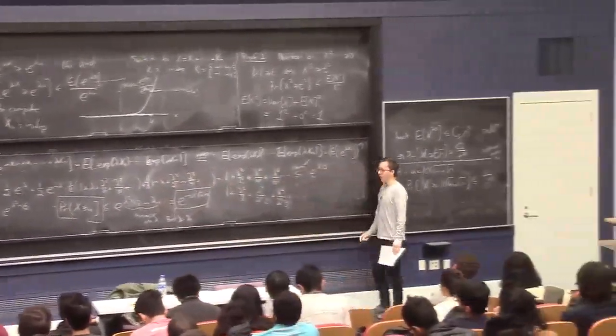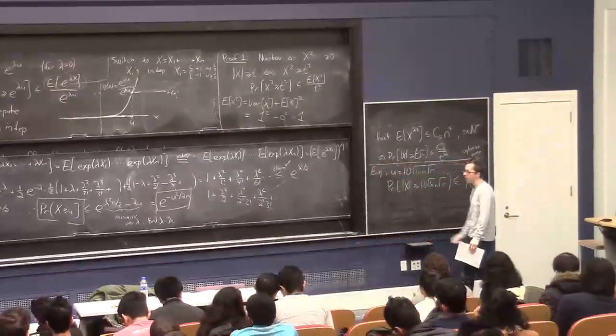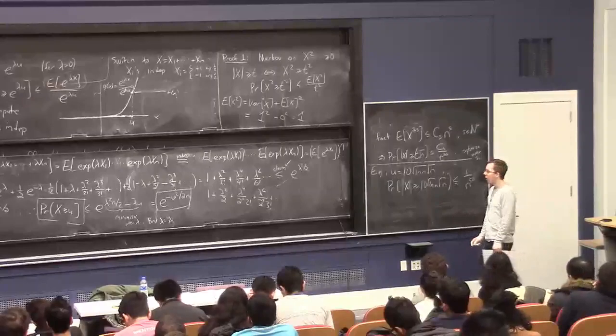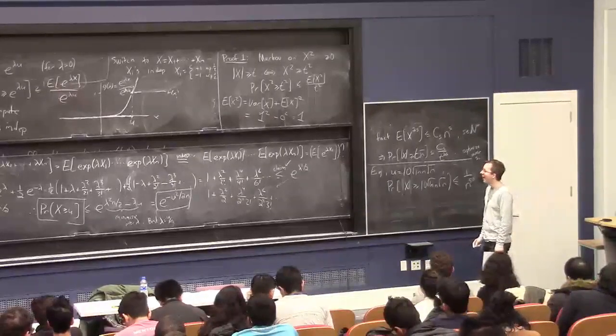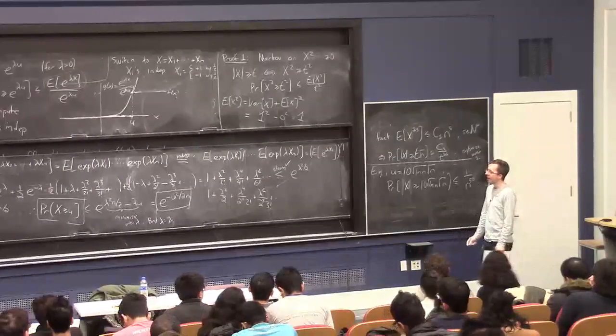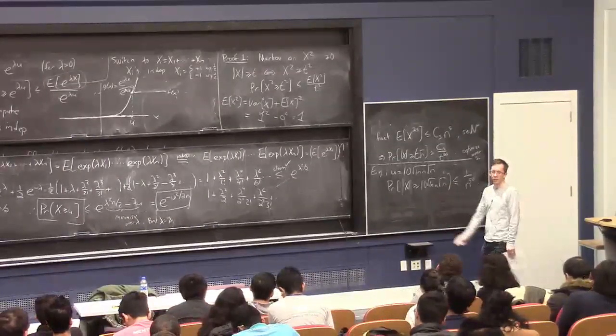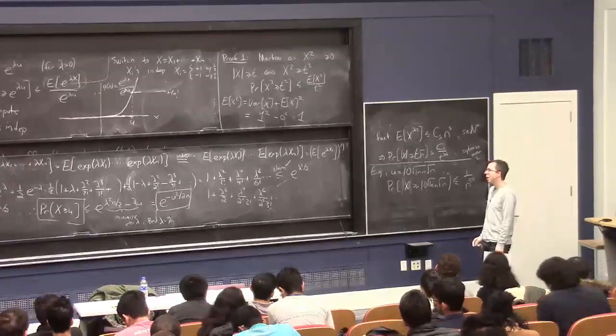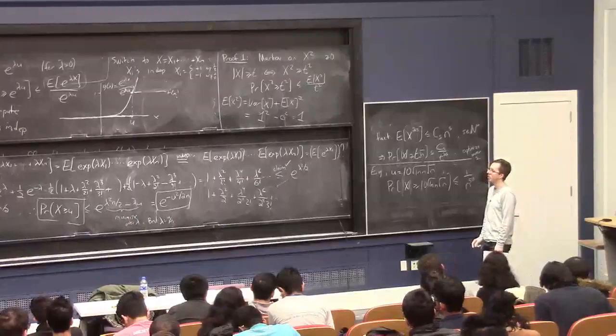So if you have different kinds of random variables, like maybe you have a random variable which is one with probability two thirds and zero with probability one third, or some other random variable, and you're taking independent sums of it, then you have to do a different calculation here. And the ideas are the same, and there's some general theory about how to handle this situation.